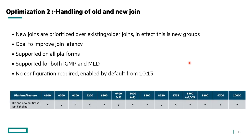Our second optimisation is titled Handling of Old and New Joins, also known as Membership Reports. At the moment, new joins aren't prioritized over existing or older joins. What we want to do is prioritize new joins, which effectively means new groups within the environment — improving latency. This is supported on all platforms, supports both IPv4 and IPv6, and as of 10.13 this is on by default with no configuration required.